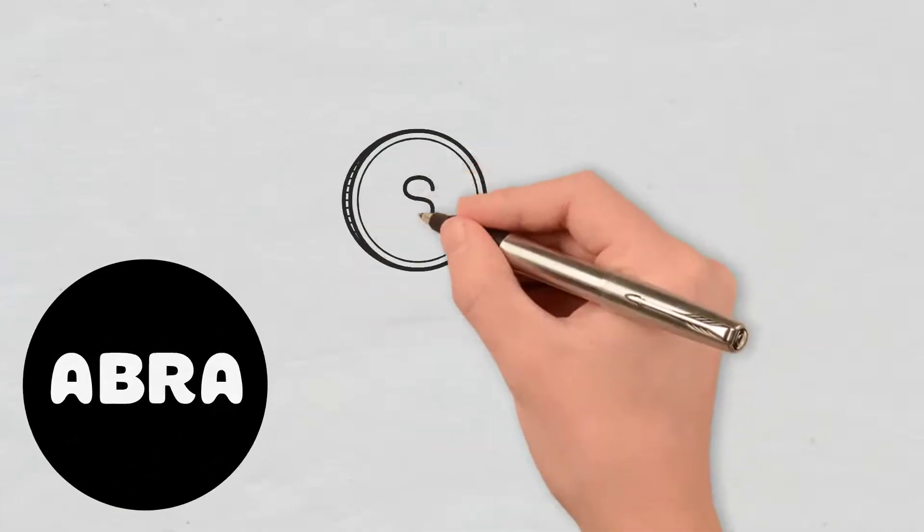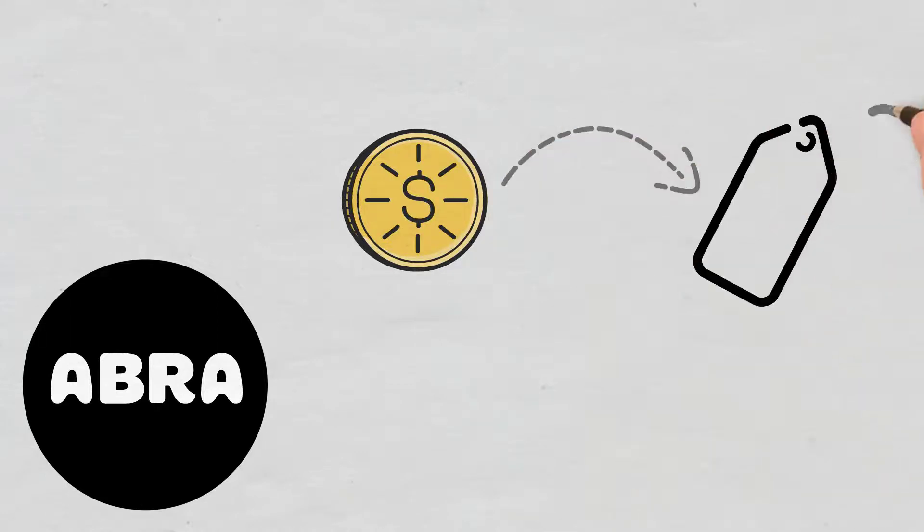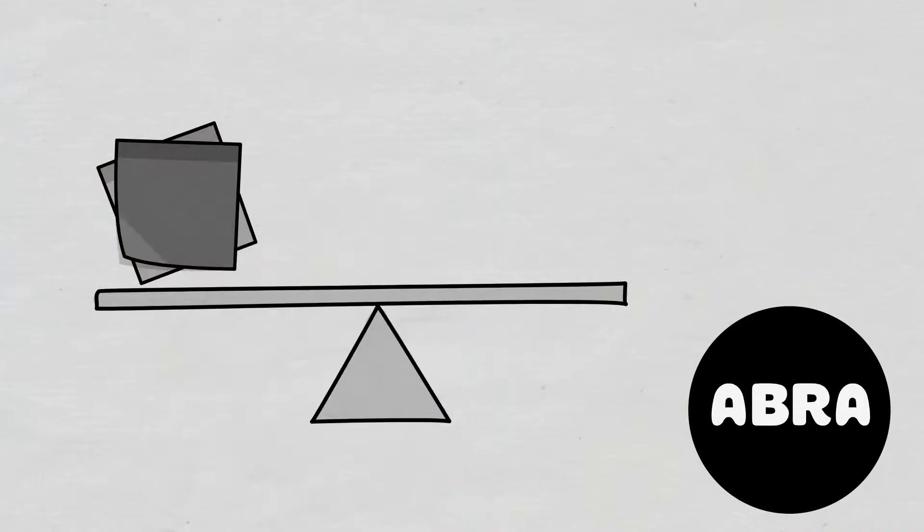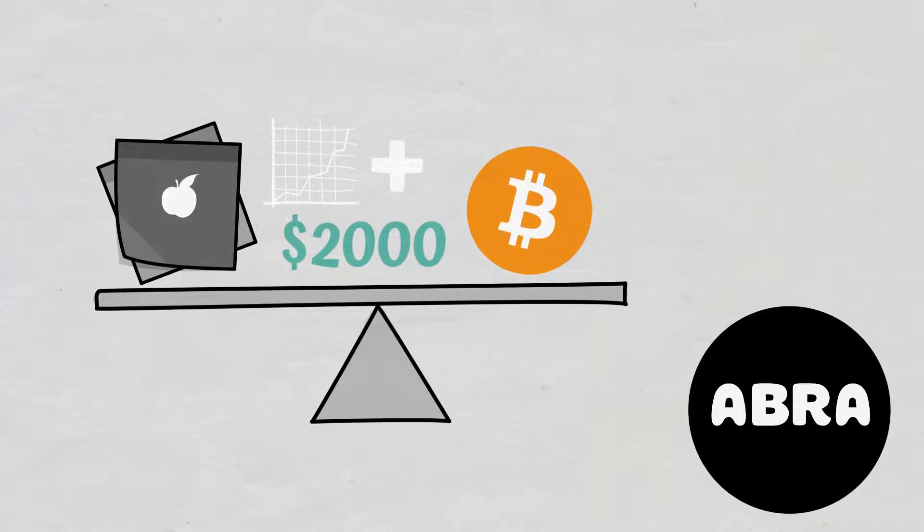For example, Abra represents a decentralized investment platform that lets people use crypto they own as collateral for creating synthetic assets. This means that if someone plans to acquire Apple stocks worth $2,000 via Abra, the company would peg $2,000 of the user's Bitcoin against the price of the stock. If the price of the Apple stock increases, the equivalent sum of Bitcoin will be added or removed from the contract.